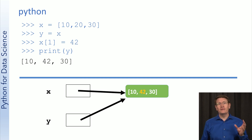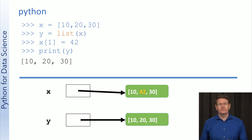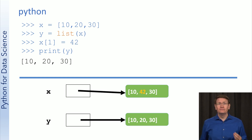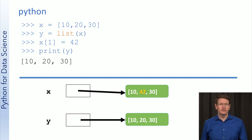Suppose you wanted to have y be an actual copy of the list. If you wanted to do that, you'd have to make this change. Saying y equals list(x) causes a new list to be created, which is a copy of x. So when you change x in line 3, it wouldn't impact your copy of the list.